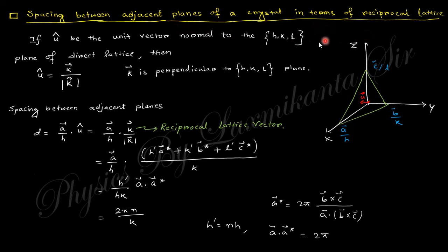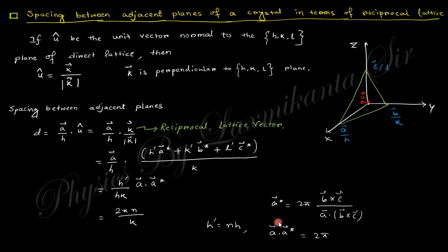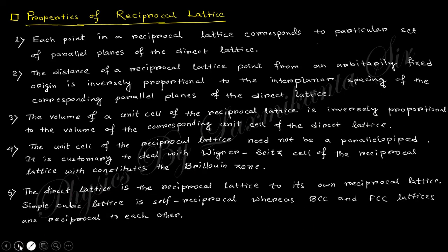To find the distance between two adjacent planes in the reciprocal lattice: if we take the perpendicular distance using the K-vector perpendicular to the plane, the distance equals a/h times u-cap. Finally, we obtain 2πn/K. Taking the a dot product terms, the perpendicular components are zero, giving a·a* = 2π. Substituting these gives the separation distance in the reciprocal lattice.